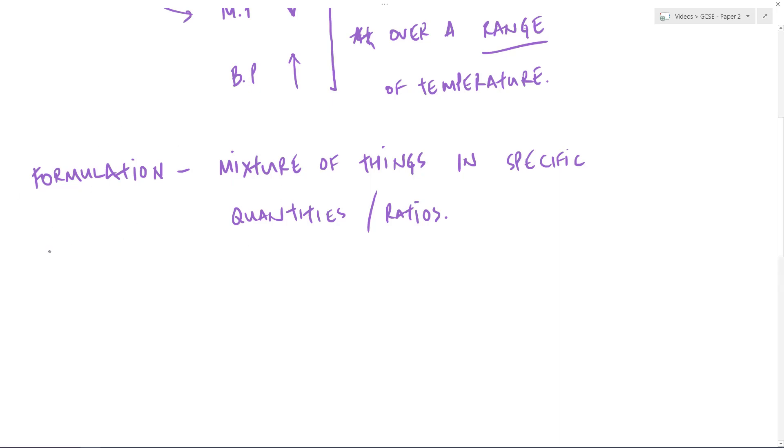So a formulation doesn't fall into the category of pure because it has a mixture of different things in it. But in this case, we are actively choosing to have a number of different things in it in specific quantities in order to fit a particular purpose. So there you have it, purity, impurity and formulations.